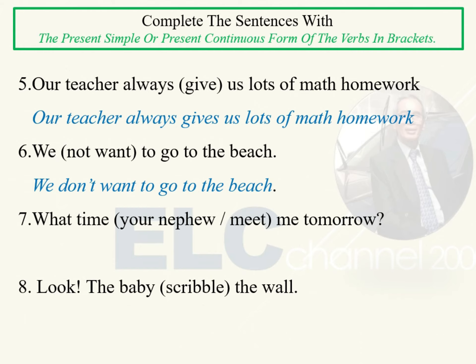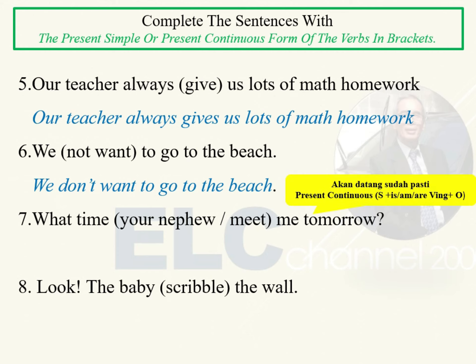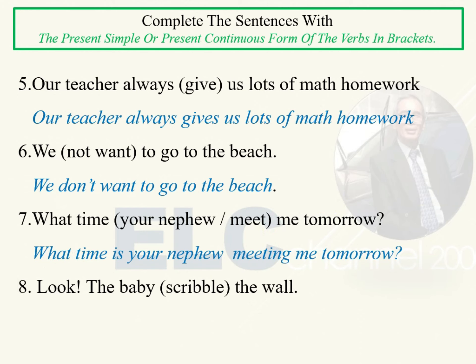Nomor tujuh: Jam berapa keponaanmu menemui aku besok? (What time your nephew meet me tomorrow?) Ada kata 'tomorrow', berarti ini adalah suatu rencana yang sudah pasti akan terjadi, sudah ada kesepakatan untuk bertemu. Jadi kita gunakan Present Continuous. Bahasa Inggrisnya: What time is your nephew meeting me tomorrow?